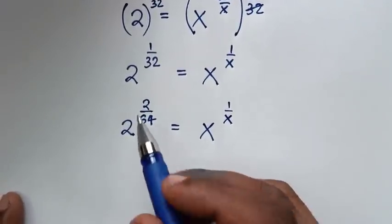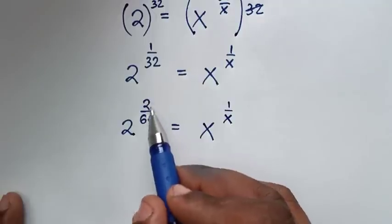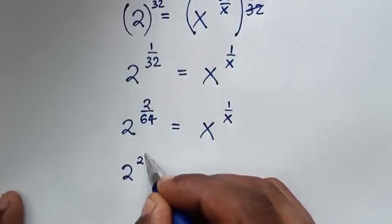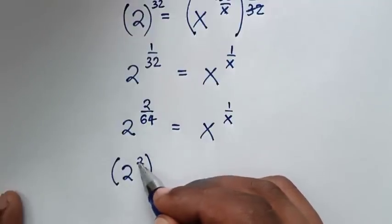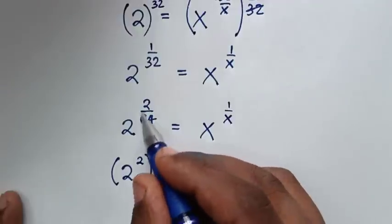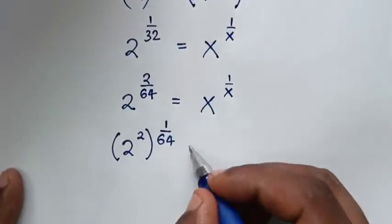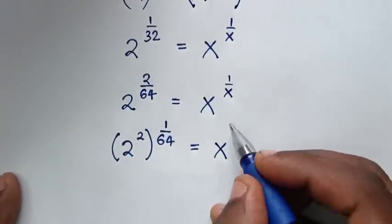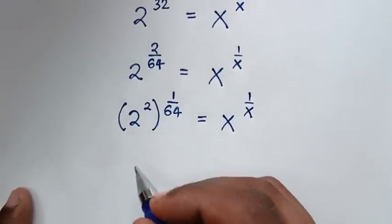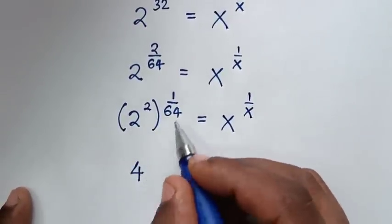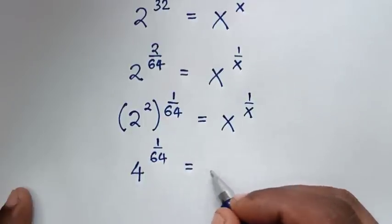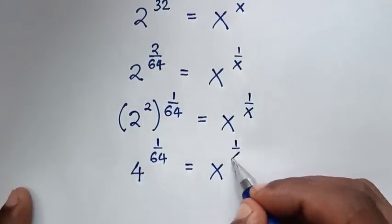In the next step, we take the 2 in the numerator inside the bracket: 2 divided by 2 is 1, leaving the power as 1 over 64. Then 2 power of 2 is 4, so we have 4 power of 1 over 64 is equal to x power of 1 over x.